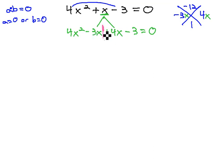We can now factor this expression by grouping, taking out of the left side x, leaving behind 4x minus 3, and on the right side, positive 1, leaving behind 4x minus 3, and it still equals 0.